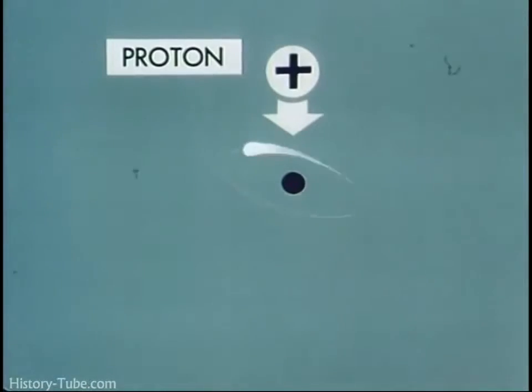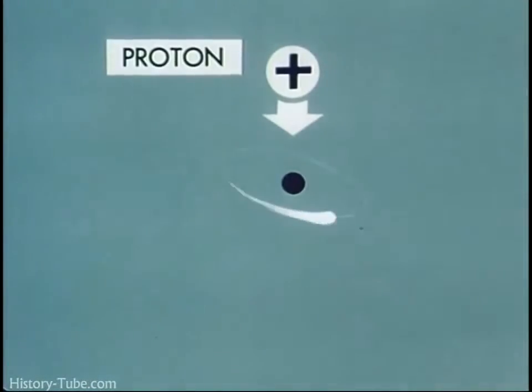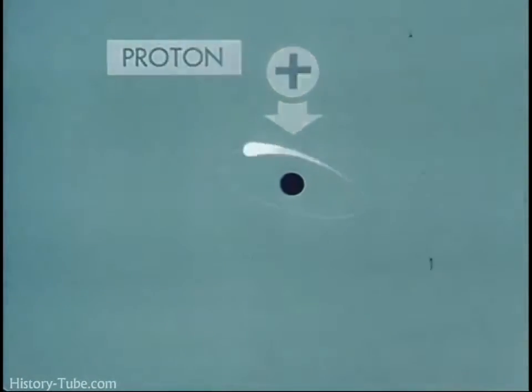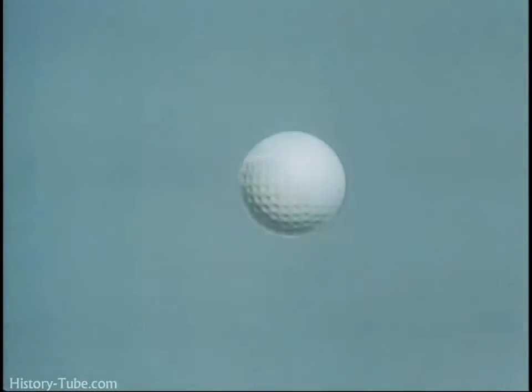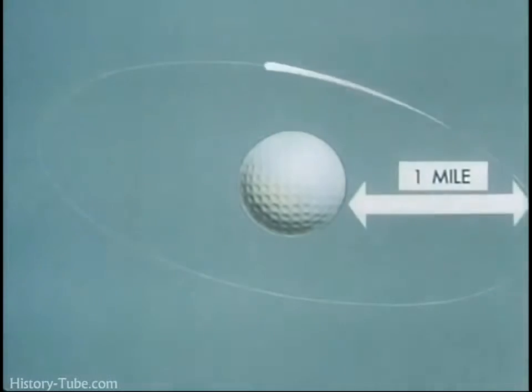To reemphasize the submicroscopic nature of our subject: if we could increase the size of the nucleus proton to that of a golf ball, the orbit of the electron would be about a mile away.